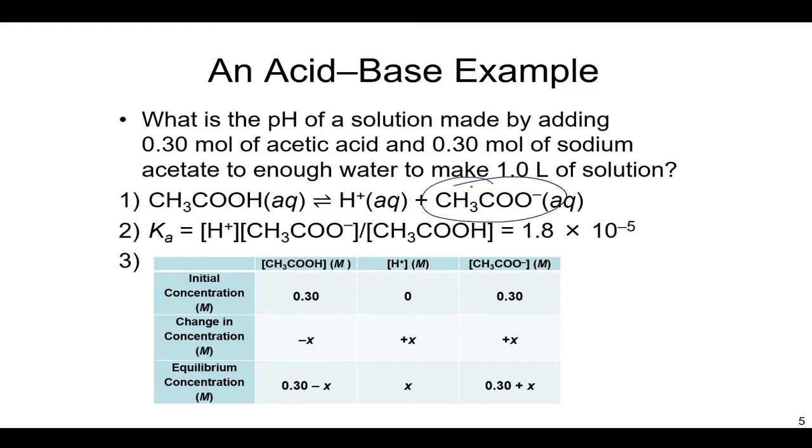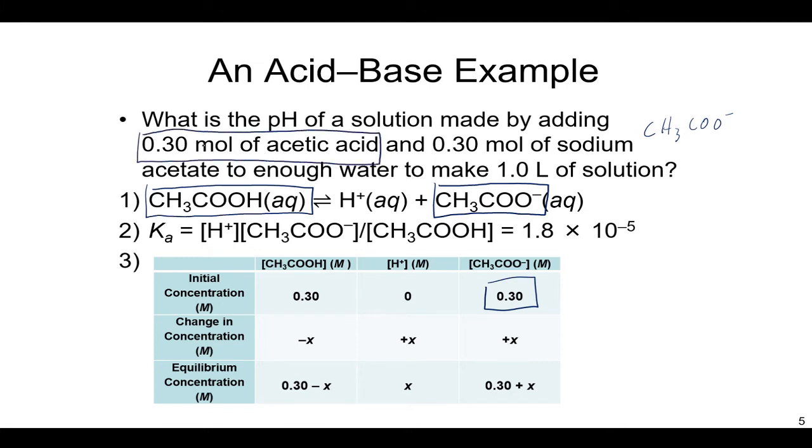So we have to attribute this 0.3 moles of sodium acetate as really, since it's a strong electrolyte, 0.3 moles of the acetate ion, CH3COO-. So this number from sodium acetate goes into my product initially. Now, my reactant here, the acetic acid, initially is also 0.3 moles in this example. These numbers aren't always going to be the same, they happen to be both 0.3 here, but they're usually going to be different.